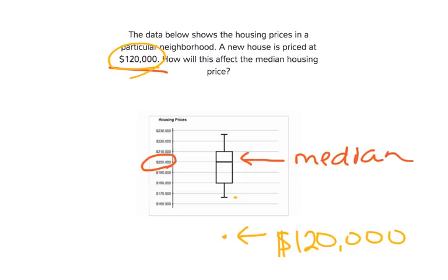Even though it's all the way down there, although that will pull the mean value down — that will decrease the mean — it will not really change the median much. The median will stay the same because the median is just the middle data point. So adding one point down here, even though it's an outlier, it's not really going to change the median because it's only one point. It will change the mean, but for the median, the central value is still going to be just around where it is now.